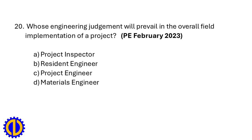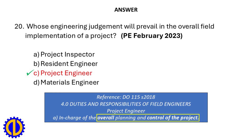Whose engineering judgment will prevail in the overall field implementation of a project? a. Project inspector, b. Resident engineer, c. Project engineer, d. Materials engineer. Answer: c. Project engineer. Reference: DO 115, 2018 — the Project Engineer is in charge of the overall planning and control of the project.